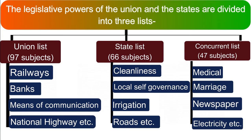In these lists, we have discussed three lists: Union, State, and Concurrent list. If a new subject is added that does not fall under any of these lists, it goes to Parliament.